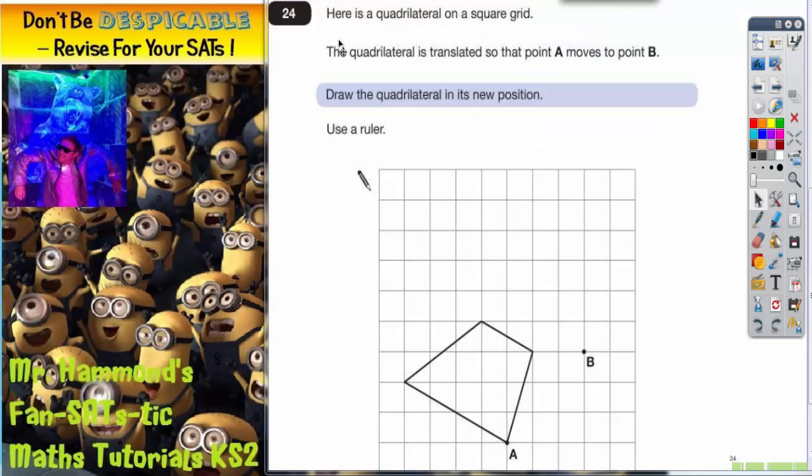Question 24. Here is a quadrilateral on a square grid. Remember, quadrilateral just means any shape with four sides. The quadrilateral is translated so that point A moves to point B. Draw the quadrilateral in its new position. Use a ruler.